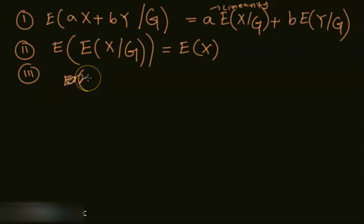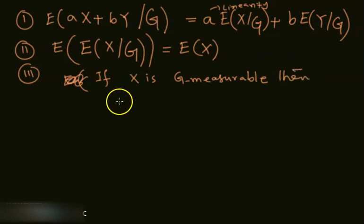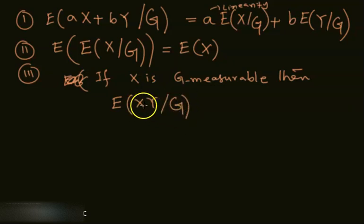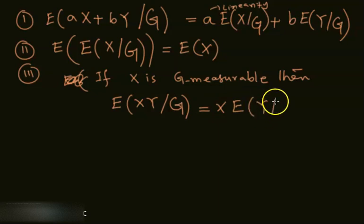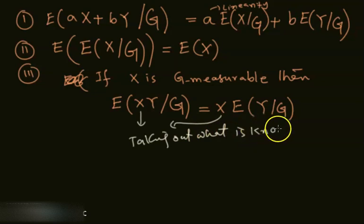Property three: if X is G-measurable, then E[X·Y | G] = X · E[Y|G]. Because X is known with respect to G, we can pull it outside of the conditional expectation. This property is known as 'taking out what is known' — since the random variable X is known in G, we can pull it outside.